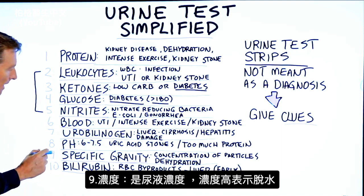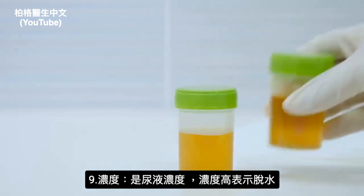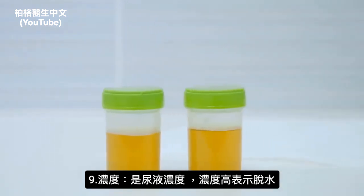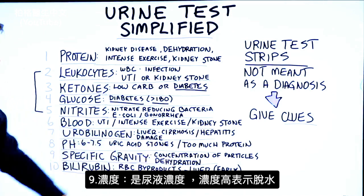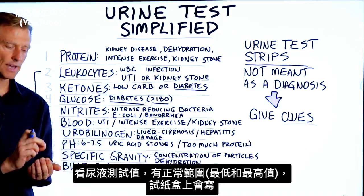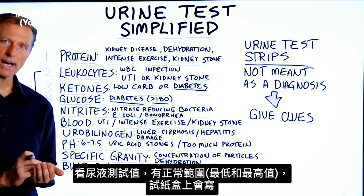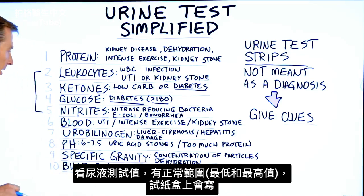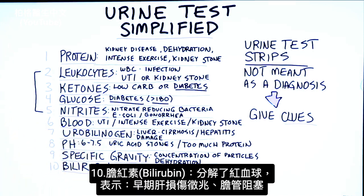Number nine, specific gravity. That's really just the concentration of particles in your urine — how concentrated your urine is — and that could indicate dehydration. When you look at these values, it's going to give you the normal ranges, low or high. You can get that data right on the testing strip box when you buy these.